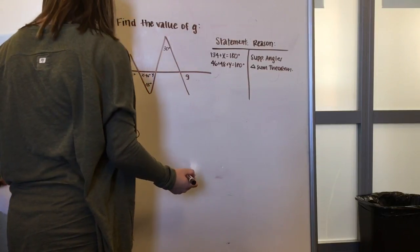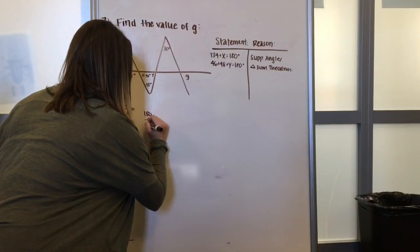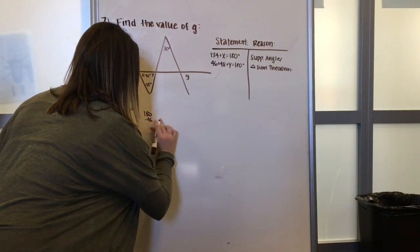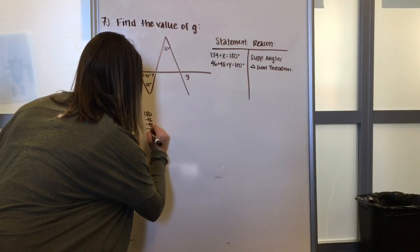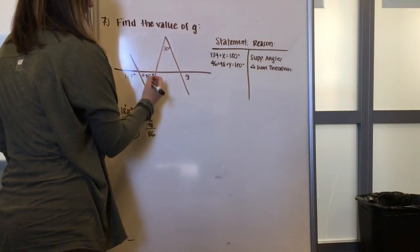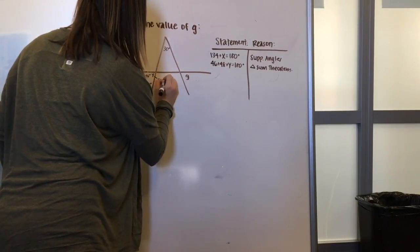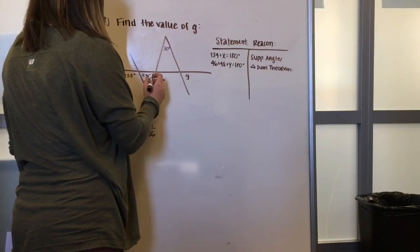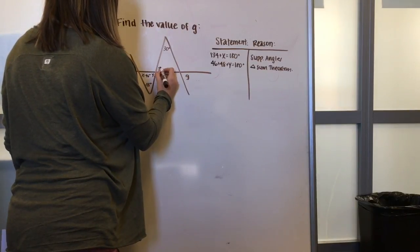Upon simplifying, we will find that y equals 86 degrees. For step 3, because of the properties of vertical angles, we know that this angle y is equivalent to this angle here, z.